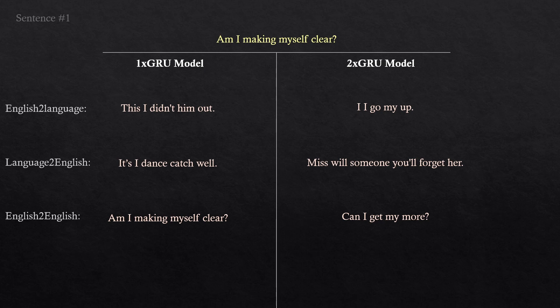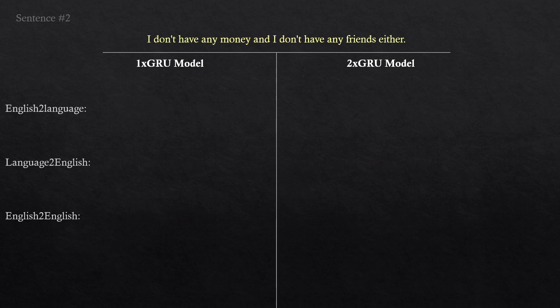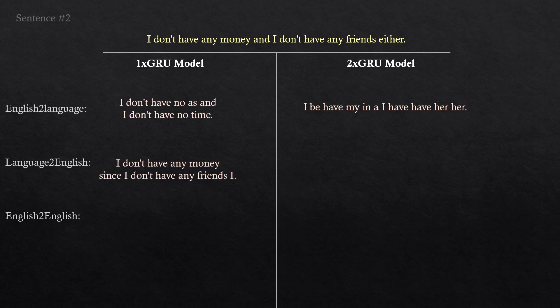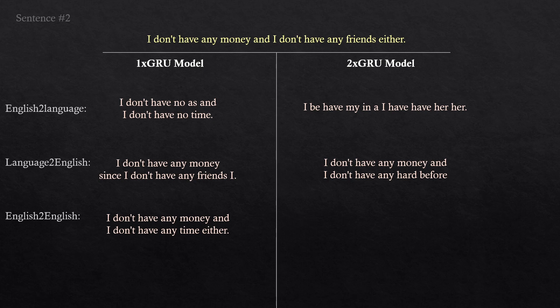Let's see some more examples. What do the models make of: 'I don't have any money, and I don't have any friends either?' The first model produces: 'I don't have no ass, and I don't have no time.' Which sounds a little weird, but as you can see, it's already using double negatives, though this might just be a coincidence. The second model seems to try and be the next Shakespeare and produces: 'I be have my, in a I have have her her.' Translating back to English gives: 'I don't have any money, since I don't have any friends, I.' Or: 'I don't have any money, and I don't have any heart before.' Checking if they understand their own language: the first model produces 'I don't have any money, and I don't have any time either' — not the same, but it is a correct sentence. The other model outputs: 'I don't have my good, and I would have her friend.'